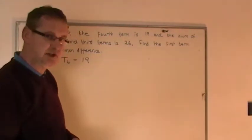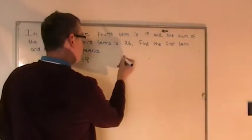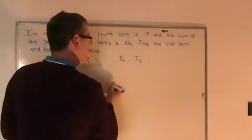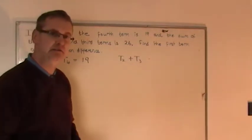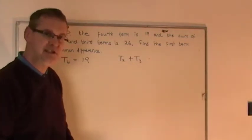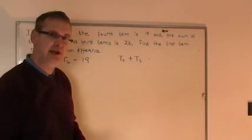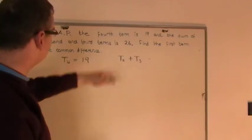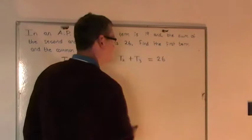So what you need to do in this question is not use the SN formula at all. What you need to do is: the second term is T2, the third term is T3, the sum of them, just those two terms on their own, can be written as T2 plus T3. So I'm not using the SN formula at all. And you're told that the sum of the second and third terms is 26, so I will put that equal to 26.